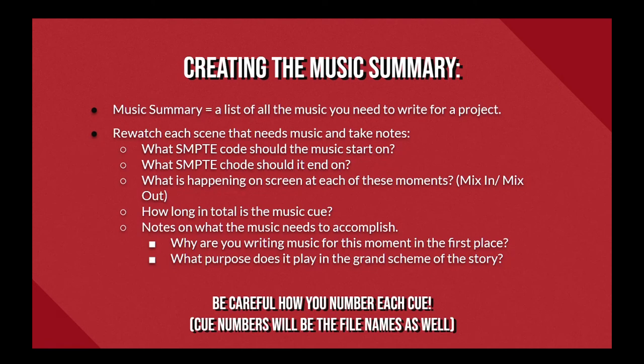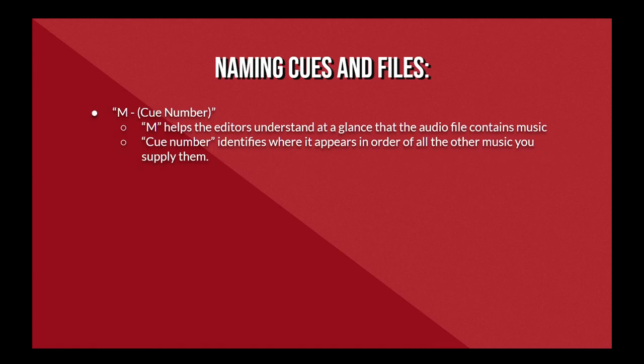A fairly common practice is to use the following format: the M helps the editors quickly identify the saved file as containing music, rather than dialogue or sound effects, while the cue number identifies where it appears in order of all the other music.